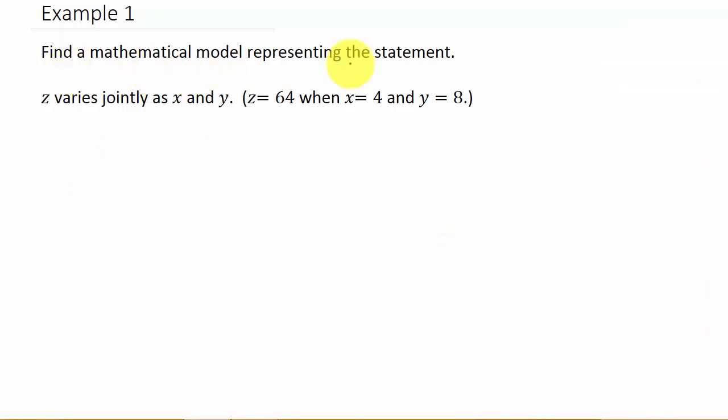Alright, so it says find a mathematical model representing Z varies jointly as X and Y. And it says Z is 64 when X is 4 and Y is 8. Alright, so let's go ahead and write this down. Now, Z varies jointly as X and Y. So that means Z is equal to some constant K times X times Y.